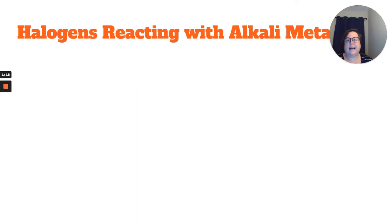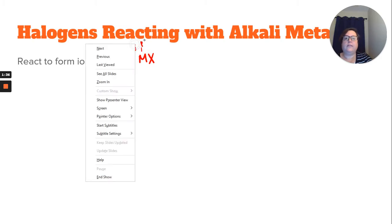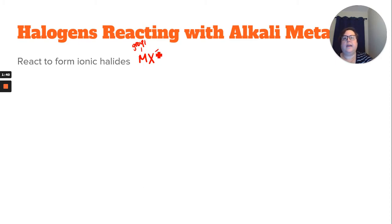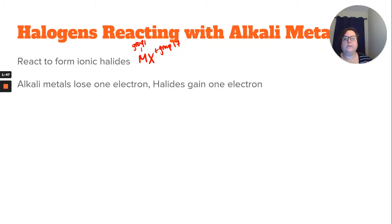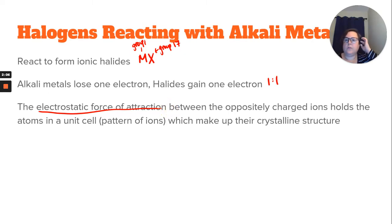When we talk about them reacting with the alkali metals, they form what we call ionic halides. An ionic halide is the alkali metal (group 1) combined with the halogen (group 17). The alkali metal loses one electron and gives it to the halogen, which gains that electron — so it's a one-to-one ratio. The electrostatic force of attraction between the oppositely charged ions holds that unit together, making up their crystalline solid.